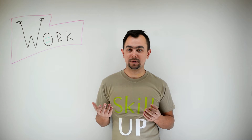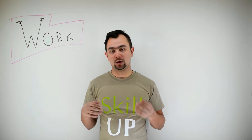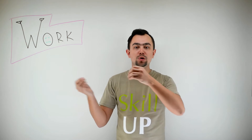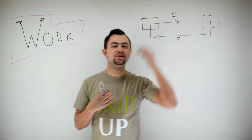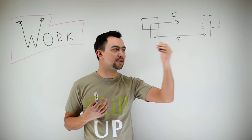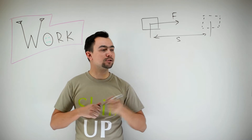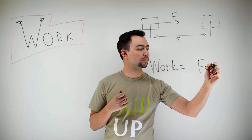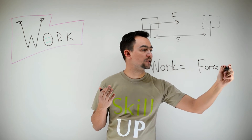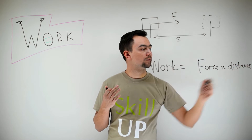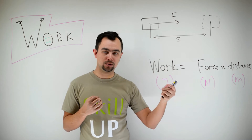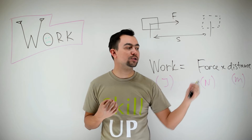Hello, it's me again, Vlad, and today I'm going to tell you about work. What is work in physics? Work is the amount of energy transformed from one form into another when a force moves. So, if a force F newtons makes a body move s meters, it does an amount of work equal to force multiplied by distance. Since work is the amount of energy transformed, it's measured in joules. Force is measured in newtons and distance in meters.